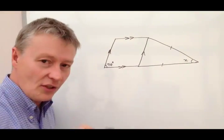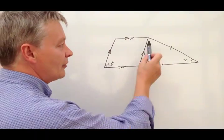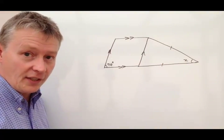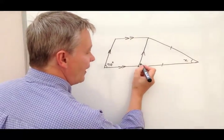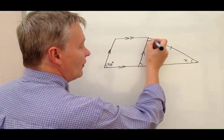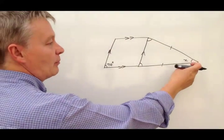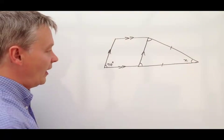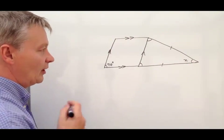So in other words, if you want to find out the value of this, if it's an isosceles triangle, every triangle's internal angles add up to 180 degrees. So providing you can find out this or this, then you should be able to work that out.